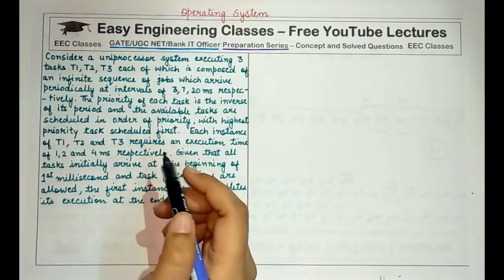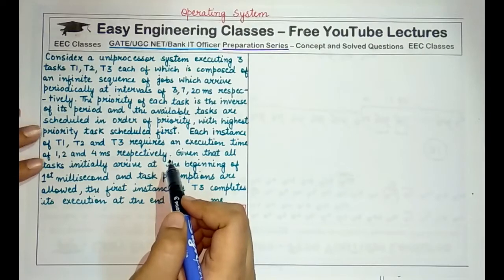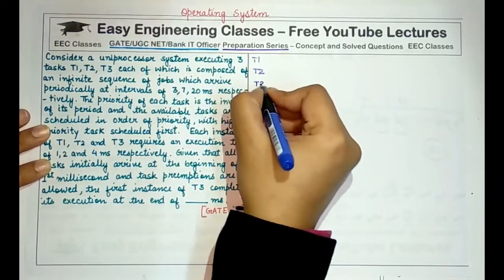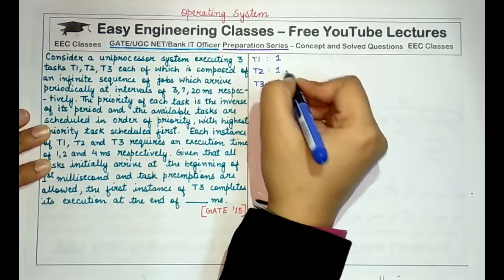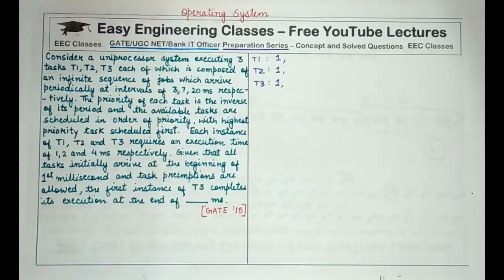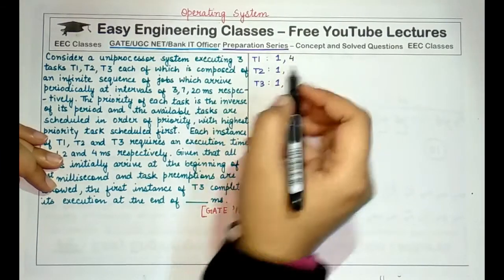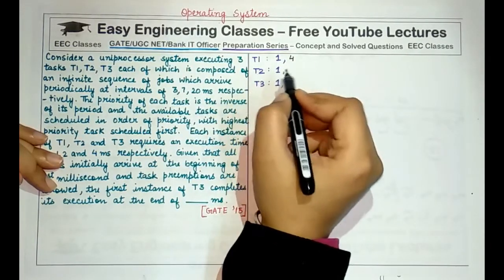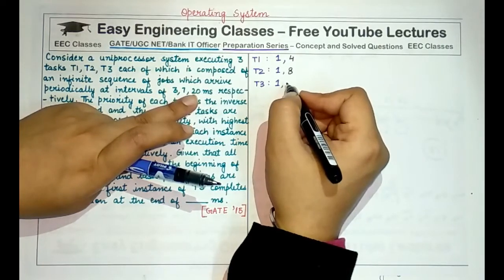There are three tasks which keep arriving at particular intervals, so they are not always available. The first instance of all three is available at 1 millisecond. After that, T1 arrives every 3 milliseconds, so its next instance arrives at 1 plus 3 equals 4 milliseconds. T2 arrives after 7 milliseconds, so the second instance of T2 arrives at 8 milliseconds, and T3's second instance arrives at 1 plus 20 equals 21 milliseconds.